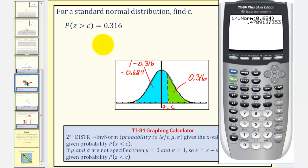This is the value of C, or the Z-score we're looking for, such that the probability of Z being greater than this value here is equal to 0.316. So round to four decimal places, C would be approximately 0.4789.